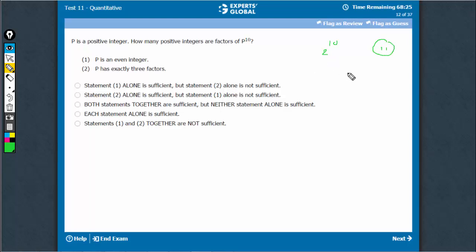However, if P were a big even number, for example, 200, this will have a lot more factors. So, various possibilities. Statement 1 is not sufficient.